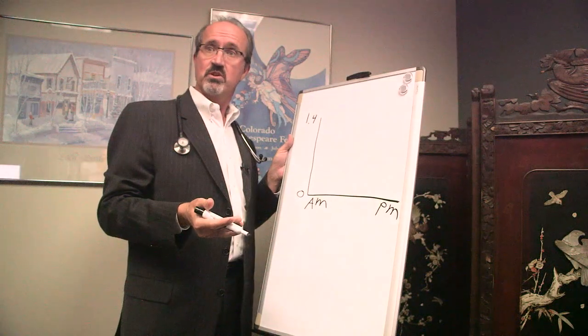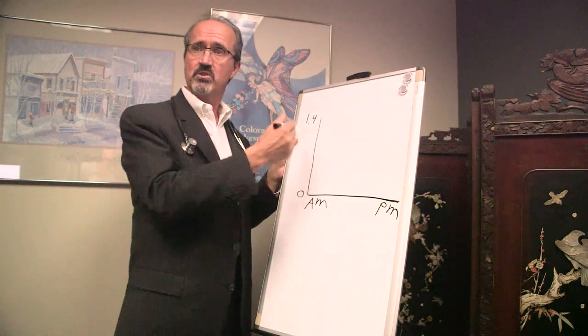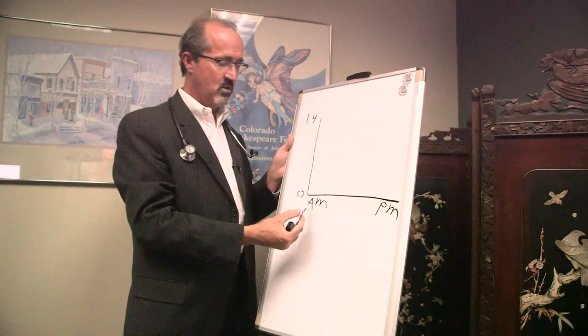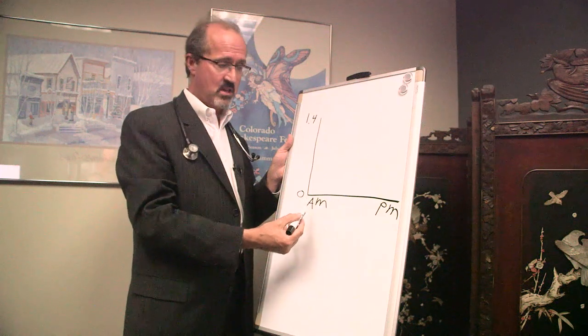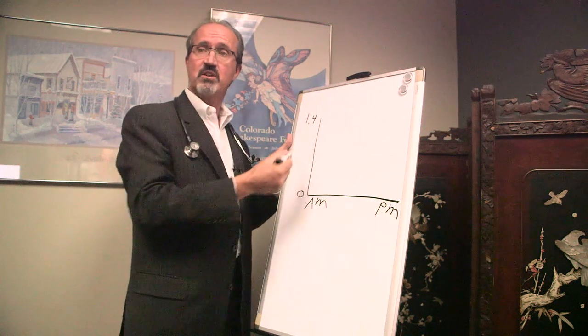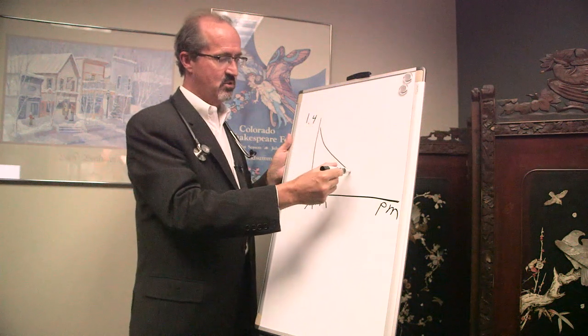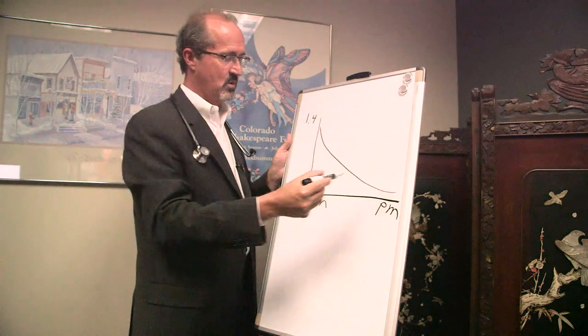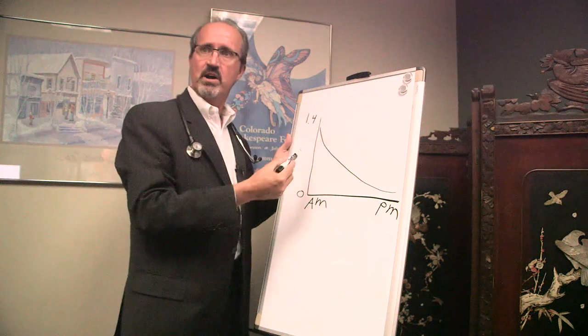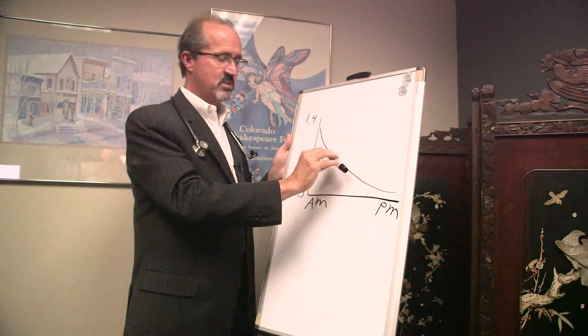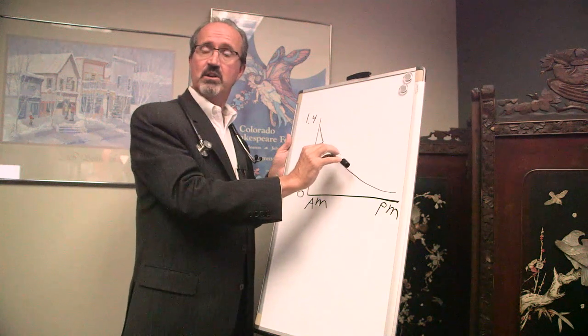Now when you do the saliva cortisol test the report comes back looking like a graph. Here on the horizontal axis we have a.m. and p.m. Here on the vertical axis we have the amount that's there. Now ideally you should be highest in the morning slowly go down as the day goes on. Now you don't want to be too high or too low but this is a system that's designed to go up and down a little bit every day.